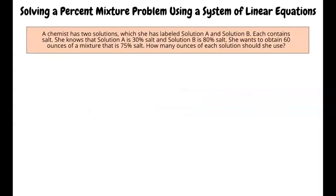Here is the example we will do. A chemist has two solutions which she has labeled solution A and solution B. Each contains salt. She knows that solution A is 30 percent salt and solution B is 80 percent salt. She wants to obtain 60 ounces of a mixture that is 75 percent salt. How many ounces of each solution should she use?